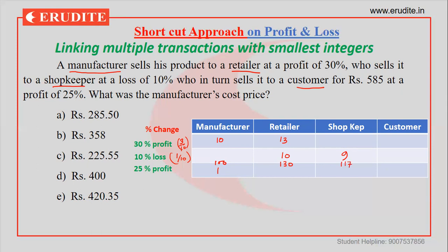Then there is a 25% profit from shopkeeper to customer. 25% is one-fourth, which means if the shopkeeper's value is 4, then the customer's value should be one more — that is 5.